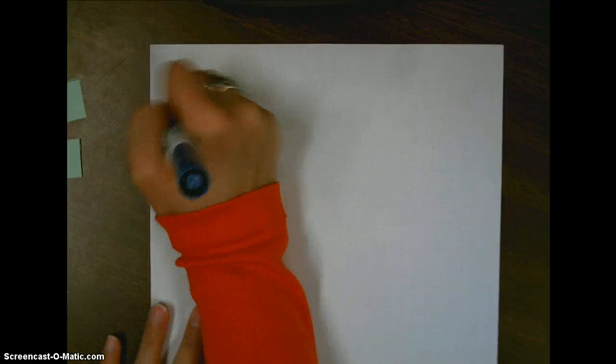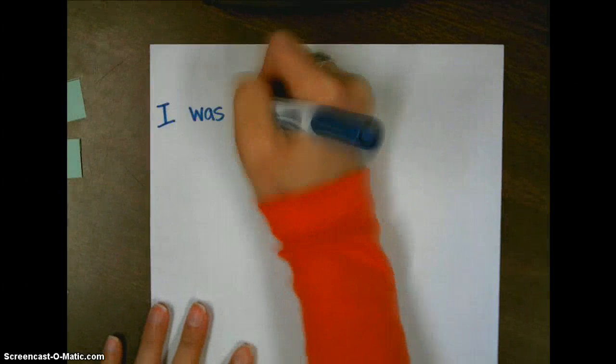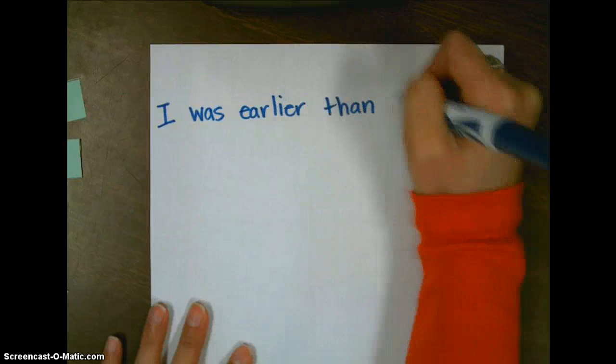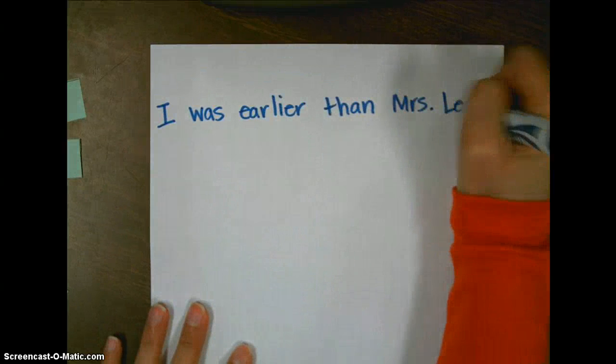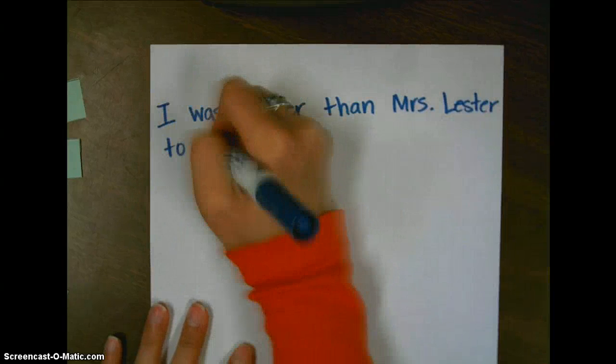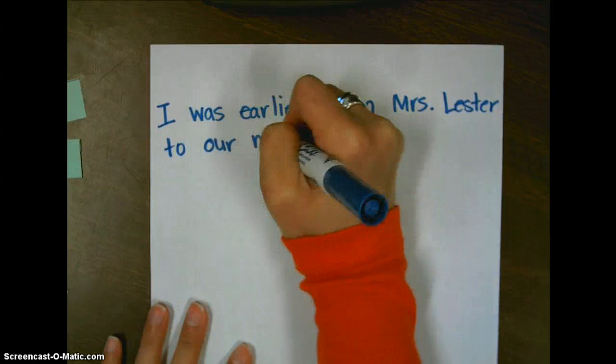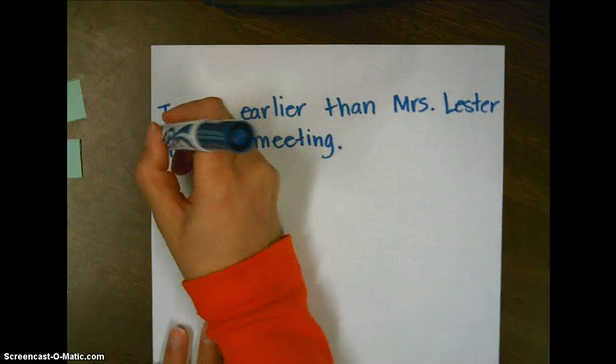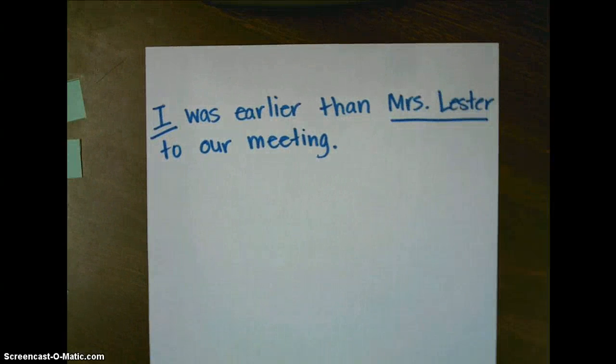Before we look any farther, let's talk about what those suffixes mean. Adding the suffix er to the end of a word or to a base word makes it compare two things. For example, if I have the word earlier that I'm going to use in a sentence, I would say I was earlier than Mrs. Lester to our meeting. So the word earlier compares me, Mrs. Lester, to Mrs. Lester. It's comparing two things.